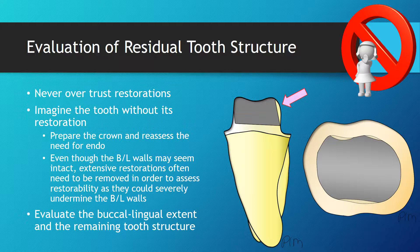In this situation, the operator might see residual tooth structure on buccal and lingual, but in reality, next to no tooth structure is present due to undermining of the direct restoration, and a crown would likely fail.